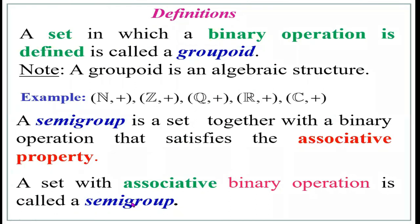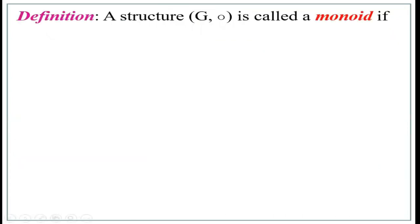So: a groupoid is a set that satisfies closure property only. A semi-group is a non-empty set satisfying closure and associative properties. The third definition is monoid.